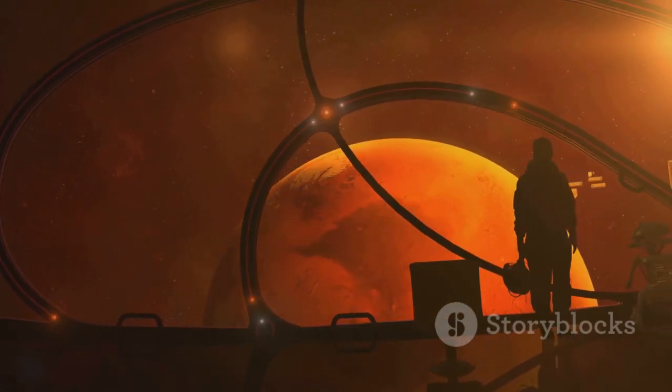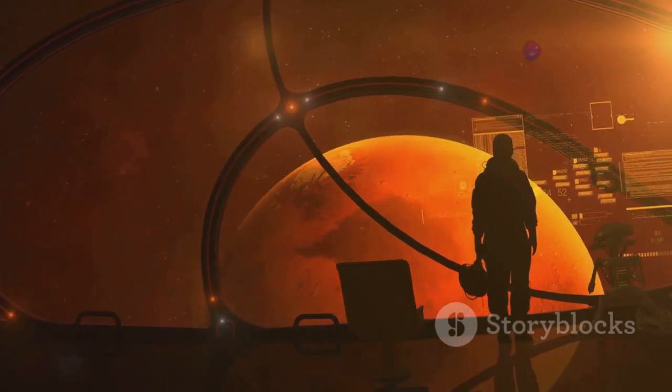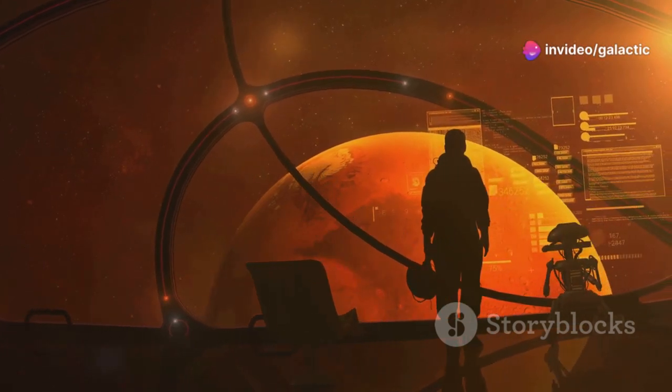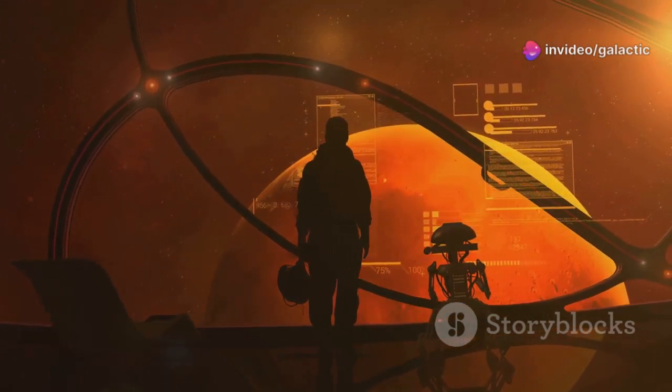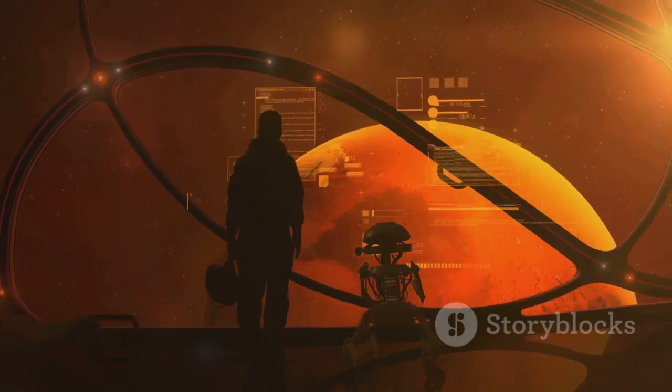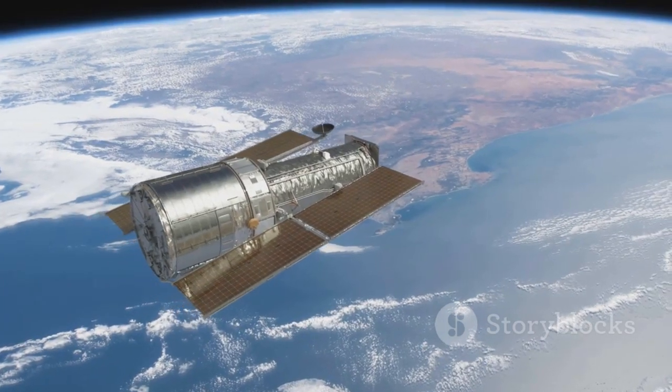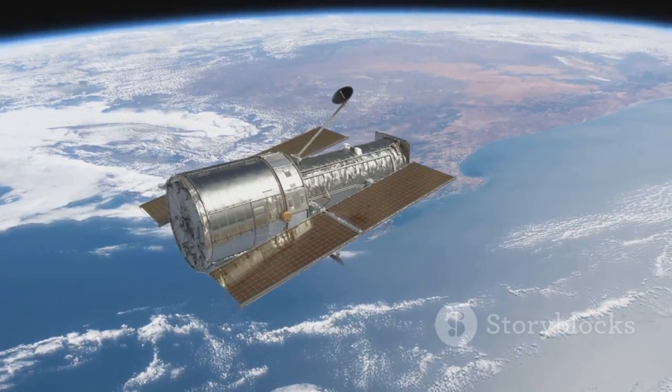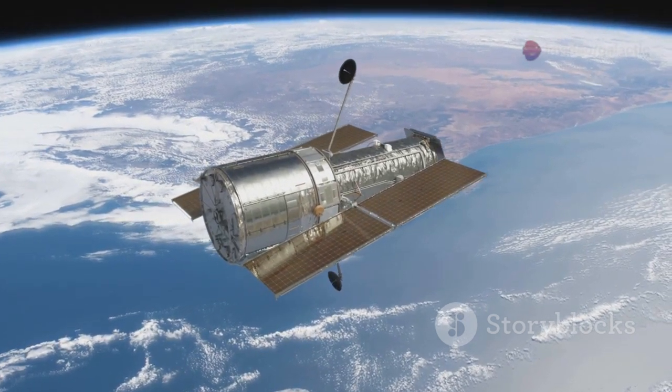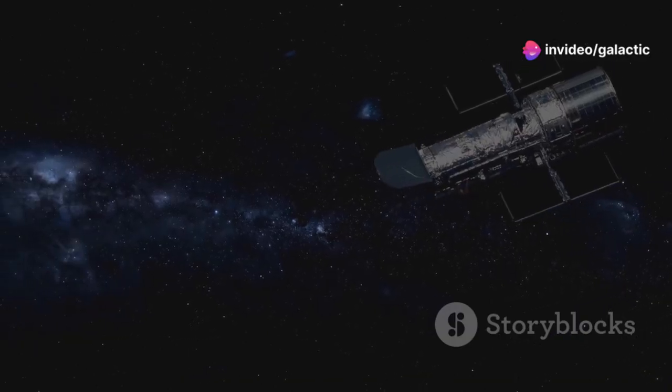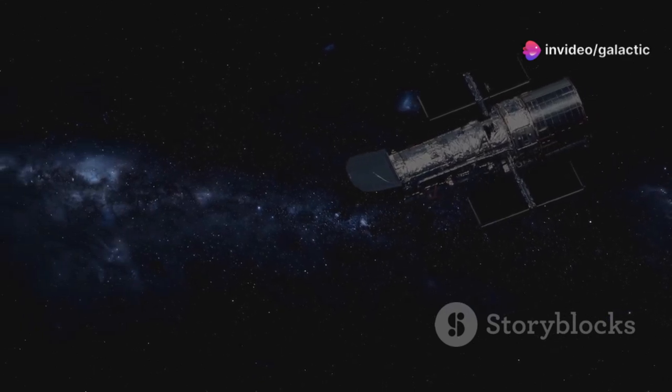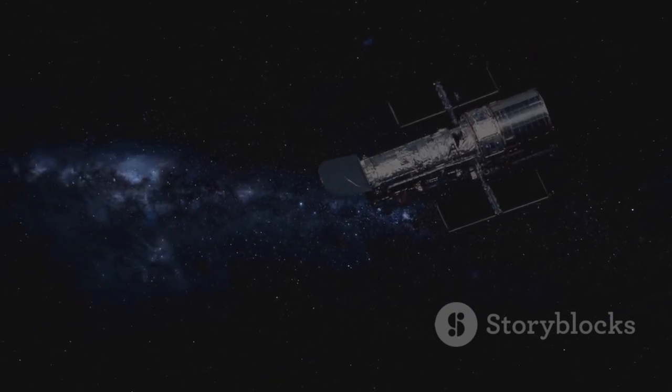Imagine a giant honeycomb made of gold, floating a million miles away in space. That's JWST. Its massive golden mirrors are specially designed to collect as much light as possible, helping us see things that are invisible to the naked eye. It's like giving the universe a super-powered pair of glasses. And let me tell you, this incredible machine is already making some mind-blowing discoveries.